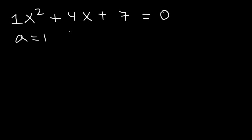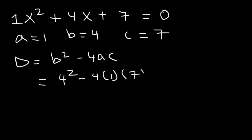a is 1, b is 4, and c is 7. So d is equal to b squared minus 4ac. b is 4, a is 1, c is 7. 4 squared is 16. 4 times 7 is 28. 16 minus 28 is negative 12.